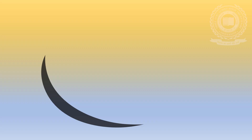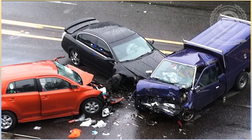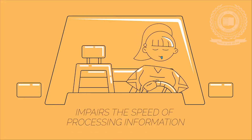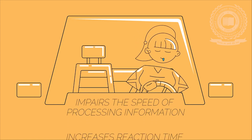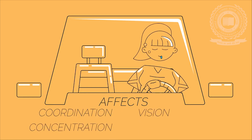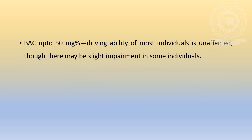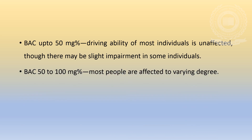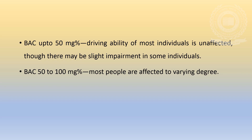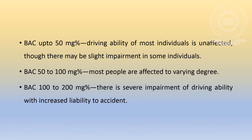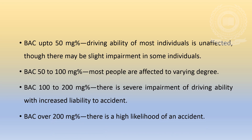Ethanol and traffic accidents: it is well known that consumption of ethanol and consequent intoxication has adverse effects on the driver of a vehicle in the form of visual blurring, motor incoordination, impairment of judgment and increased reaction time. Correlation of BAC with driving impairment is as follows: BAC up to 50 mg per 100 ml — driving ability of most individuals is unaffected, though there may be slight impairment in some. BAC 50–100 mg per 100 ml — most people are affected to varying degrees. BAC 100–200 mg per 100 ml — there is severe impairment of driving ability with increased liability to accident. BAC over 200 mg per 100 ml — there is a high likelihood of an accident.